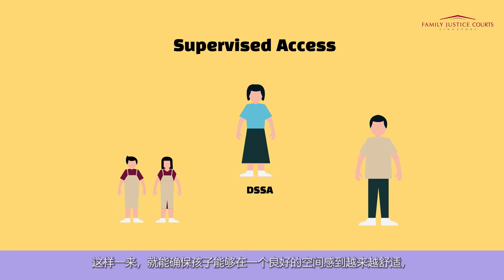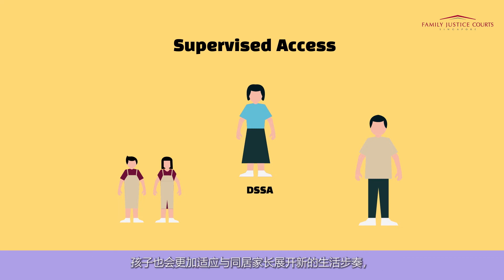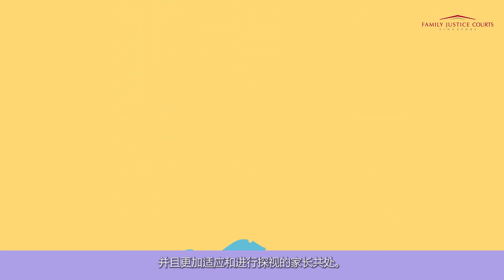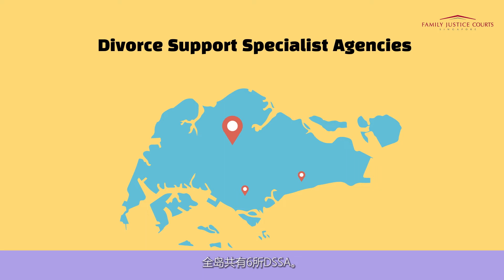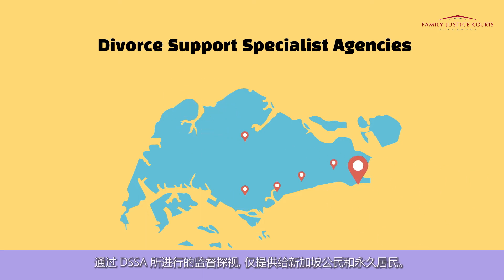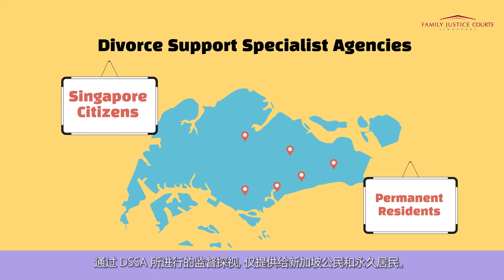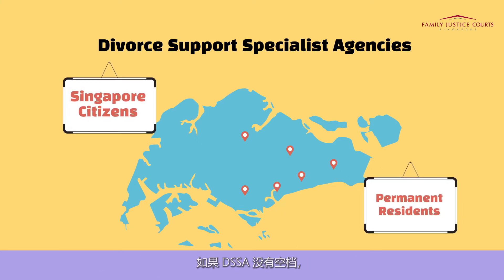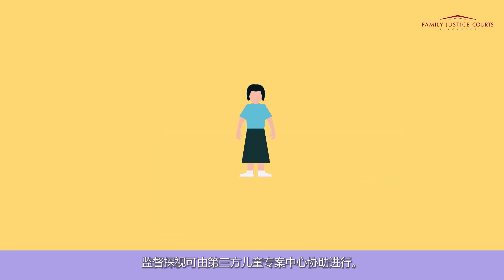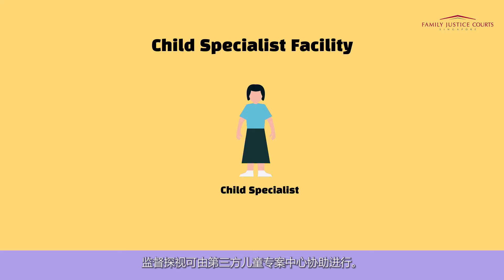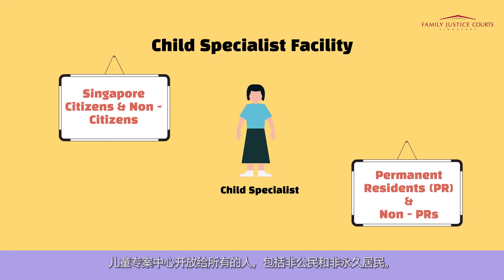This ensures a conducive space for the child to become increasingly comfortable and more attuned to the new routine of staying with the care parent and spending time with the access parent. There are six DSSAs located across the island. Supervised access via the DSSA is only available for Singapore citizens and Singapore permanent residents. If a DSSA is not available, supervised access may be facilitated by a third party child specialist facility, which is available to everyone, including non-citizens and non-PRs.